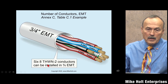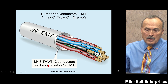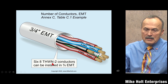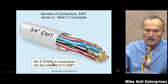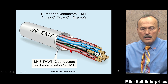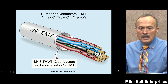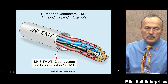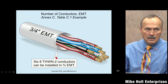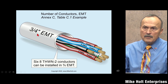Next example: if you had six #8 THWN-2 conductors, what size raceway do you need? You take the insulation type, the number of conductors, and select the raceway - working it backward. That comes out to three-quarter inch.